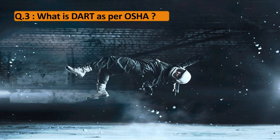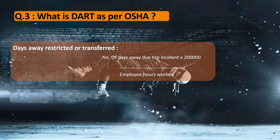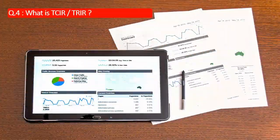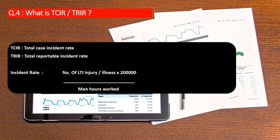Question number 3: What is DART as per OSHA? DART refers to Days Away, Restricted, or Transferred. This is the formula to calculate the days away restricted or transferred after an incident: number of days away due to top incident multiplied by 200,000 divided by employee hours worked. Question number 4: What is TCIR or TRIR? It refers to Total Case Incident Rate, or TRIR refers to Total Reportable Incident Rate. The formula is: number of LTI injuries or illnesses multiplied by 200,000 divided by man-hours worked.